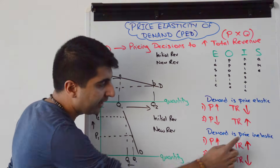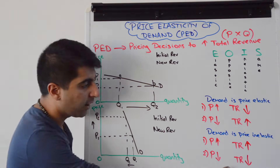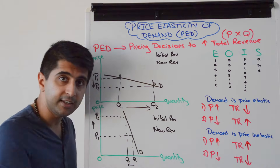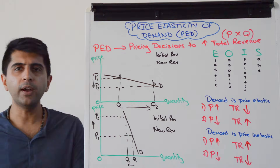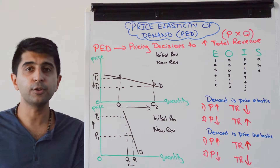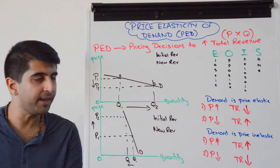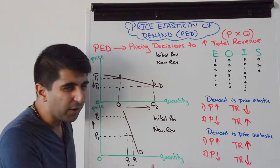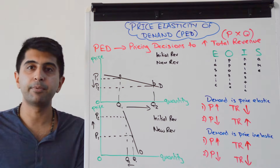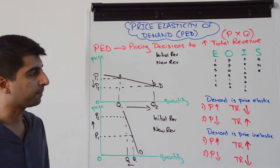Whereas if demand is price inelastic and you drop your price, TR is going to fall — it's going to do the same thing and decrease. Because as you decrease your price, quantity demanded will increase but only by a tiny bit. So you're selling only a little bit more but at a much lower price, and total revenue is going to fall.